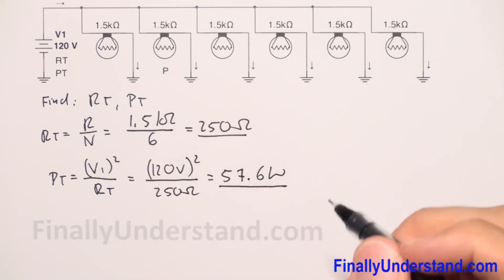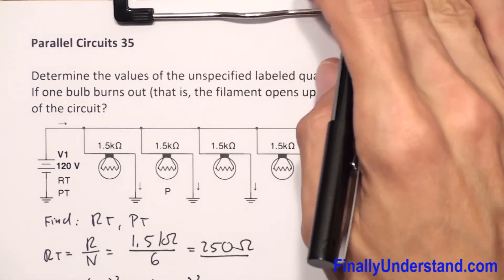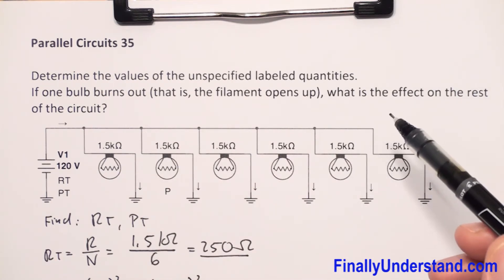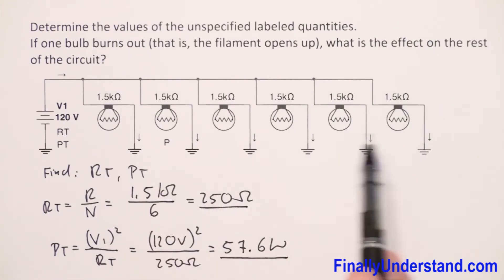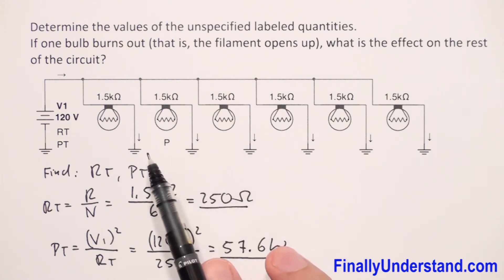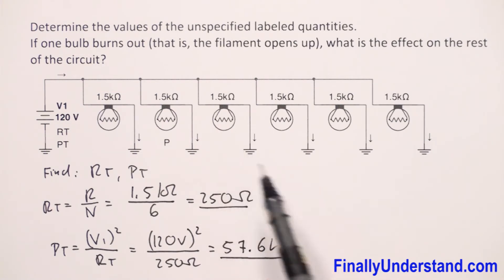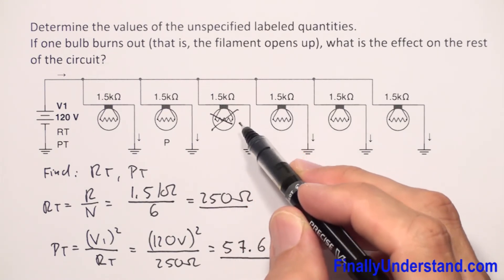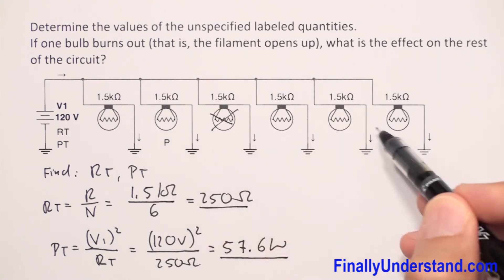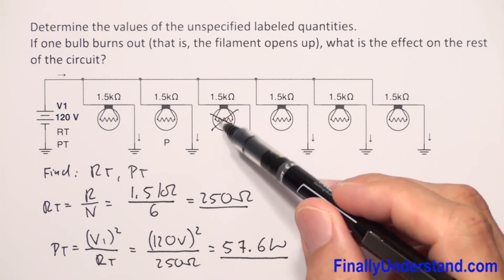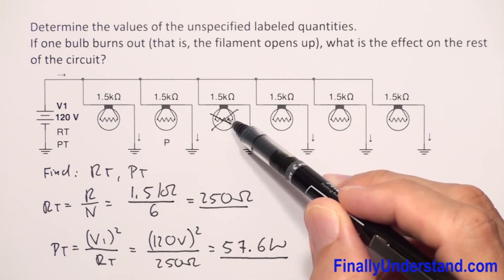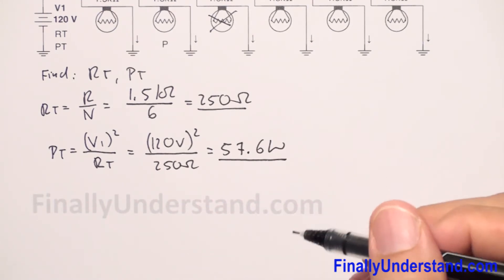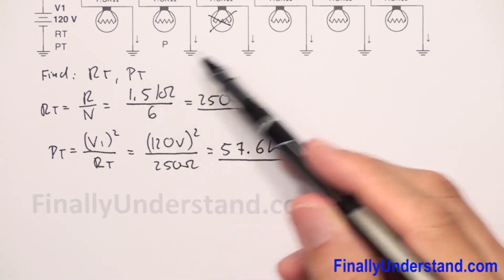The problem asks: if one bulb burns, what is the effect on the rest of the circuit? Because this is a parallel circuit, if one bulb burns it will go dark, but the rest of them are going to work fine. That burned bulb is not going to affect the other bulbs much — the street is not going to be in the dark.